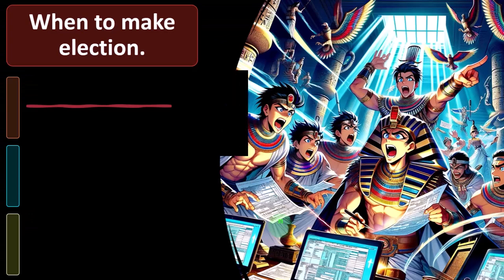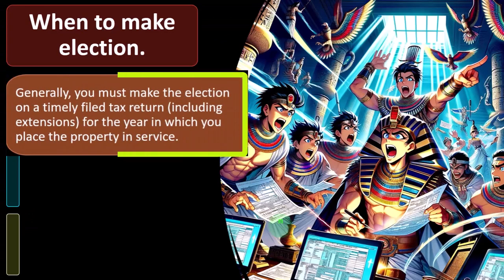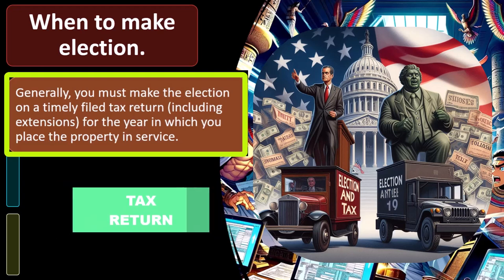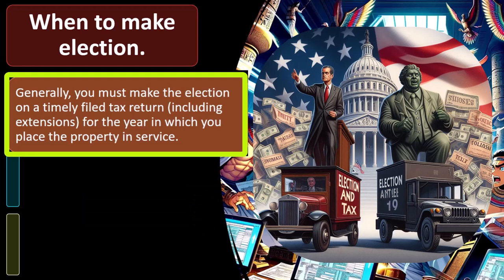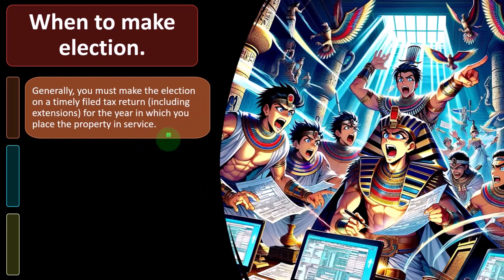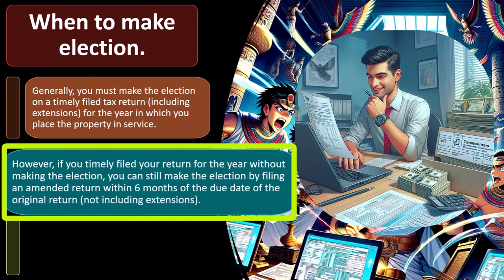Generally, you must make the election on a timely filed tax return, including extensions — typically due April 15th, plus any extensions — for the year in which you place the property in service. However, if you timely filed your return without making the election, you can still make it by filing an amended return within six months of the due date of the original return, not including extensions.